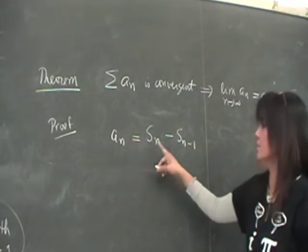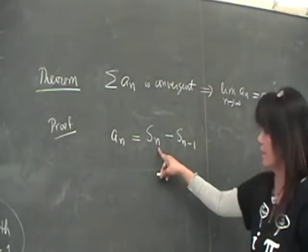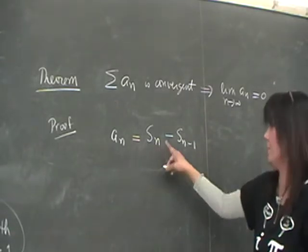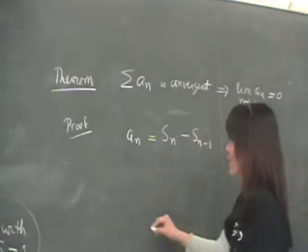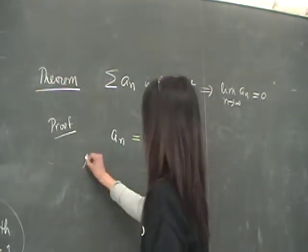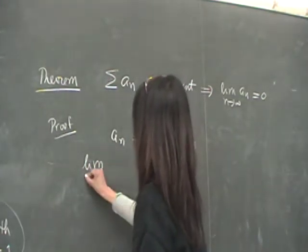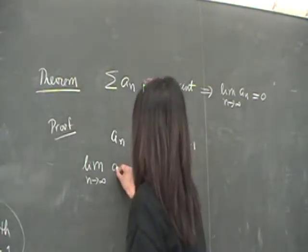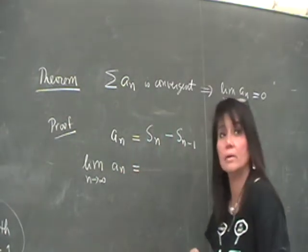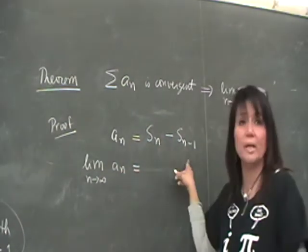So A sub N is the difference of S sub N, the nth partial sum, minus the N minus first partial sum. What do we want to do? We want to get the limit as N becomes large of A sub N, right? So that's going to be the limit of the right side, correct?